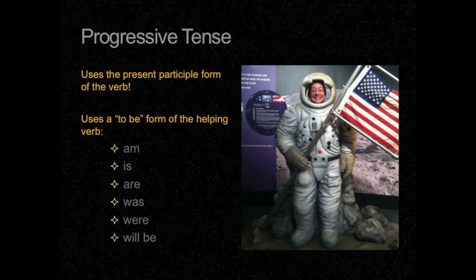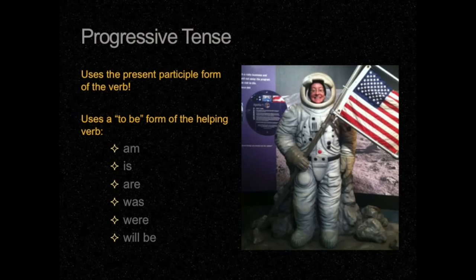Why did the sun go to school? To get brighter! Now, here's how we use the present participle. We use it to make something called the progressive tense. The progressive tense is a tense that shows action that is ongoing — it can be past, present, or future. But to make the progressive tense, you use the present participle form of the verb, which, remember, is the -ing form.